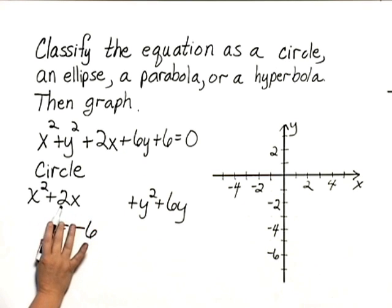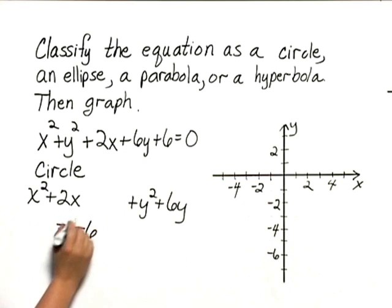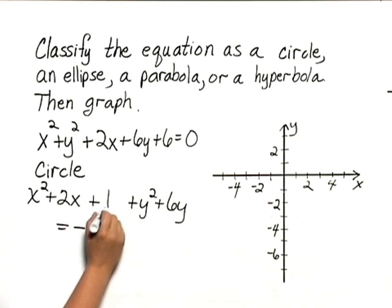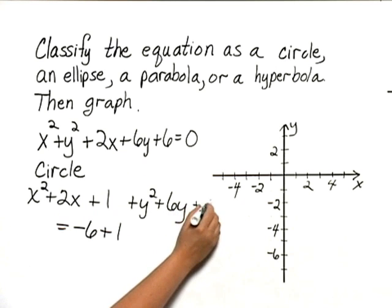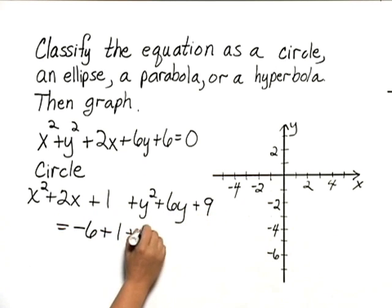To complete the square here, we take half of 2, which is 1, and square it and get 1, and add that to both sides of the equation. To complete the square here, we take half of 6 and square it, which is 9, and add that to both sides of the equation.